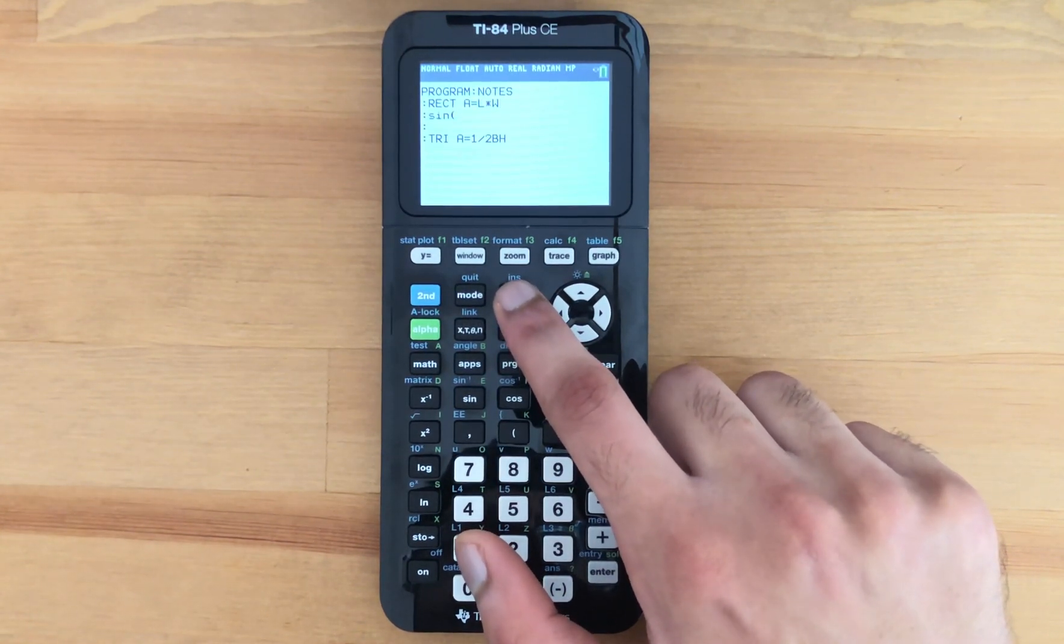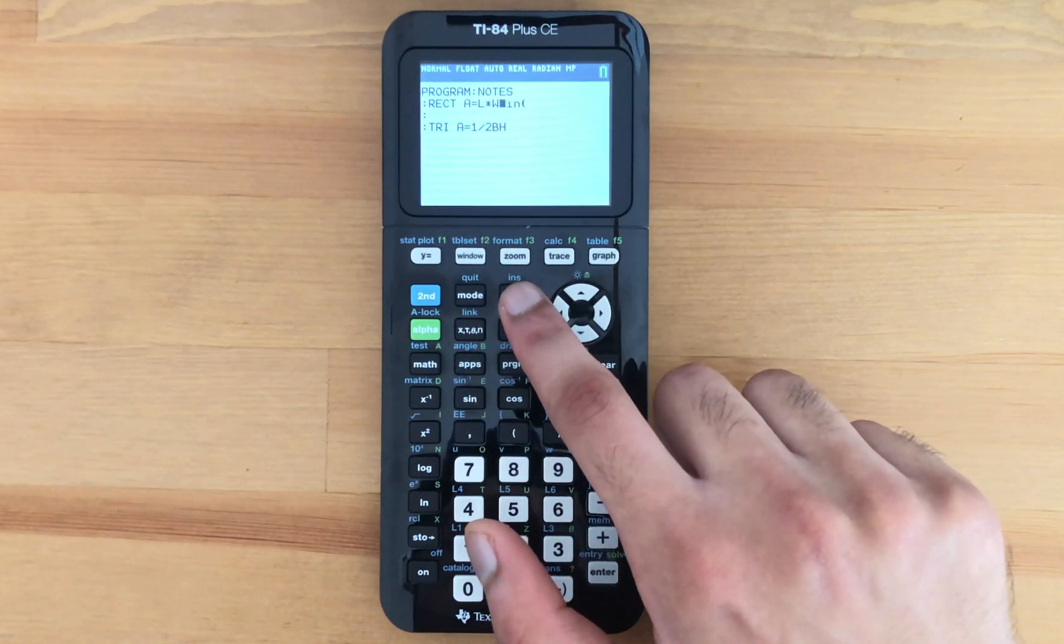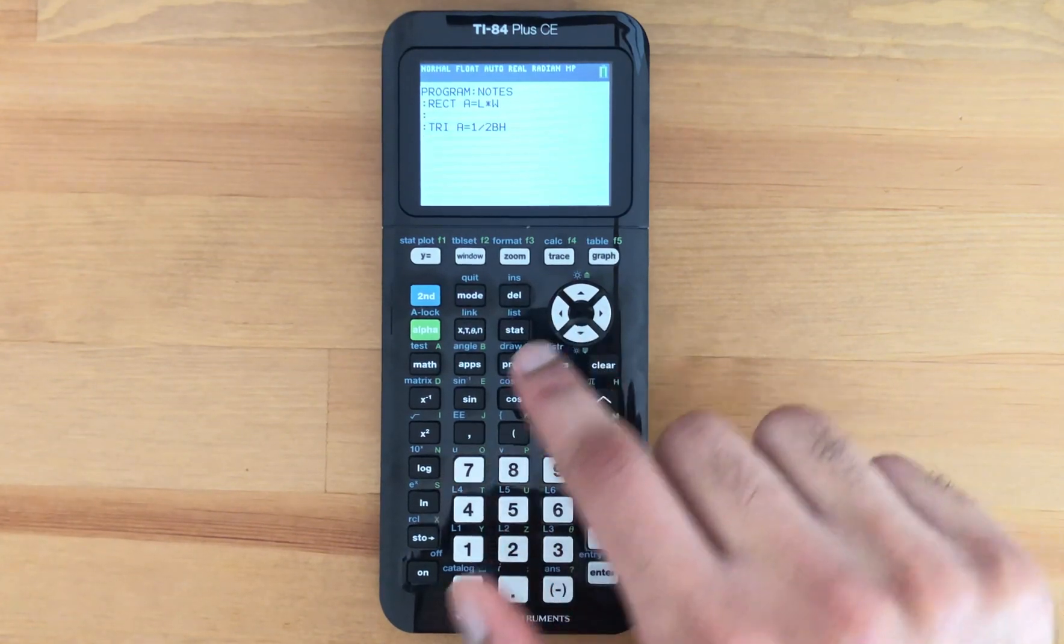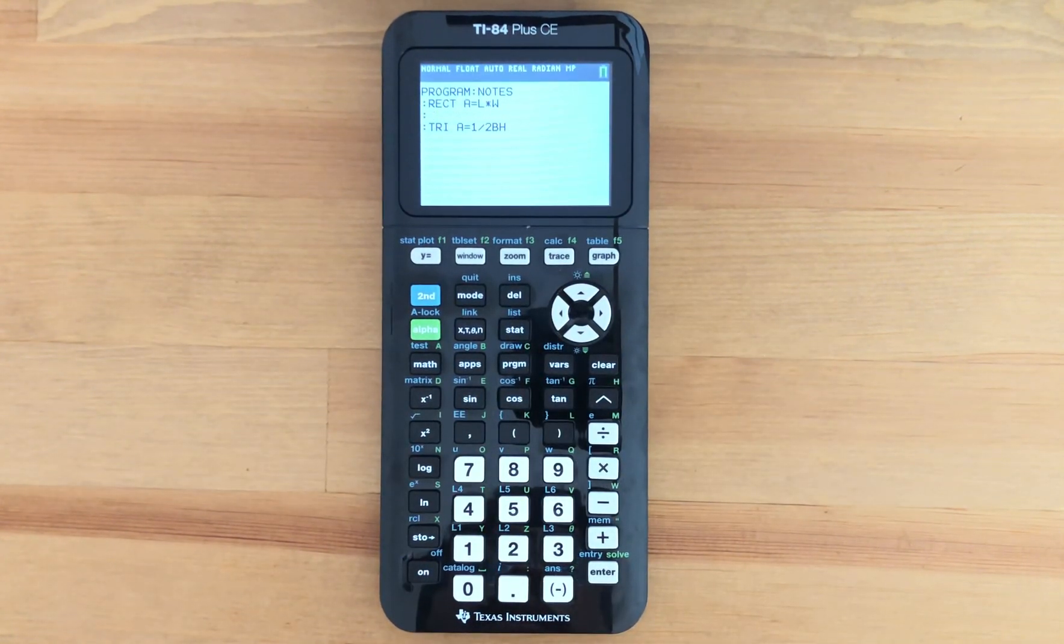So I'm gonna press delete once, and once more, and then I can press delete once more, and then I'll get rid of the sine function. And that's how you delete unwanted lines on your TI-84 Plus CE graphing calculator.